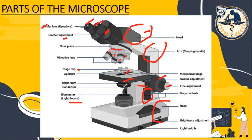We have our condenser, found under the stage next to the diaphragm. The major role of the condenser is to ensure clear, sharp images — without the condenser, the image will not be as sharp as what we want to observe. Then we have our diaphragm, also found under the stage, whose primary role is to control the amount of light from our illuminator that will pass through our specimen.